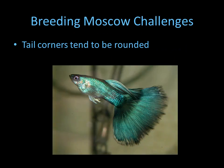Moscows in general tend to have very rounded corners on the tail — this is an extreme example, but watch out for it when choosing your males. Try to pick some that have the best corners possible. After many years of breeding, it always still has a slight roundedness and it's very tough to get it sharp in green Moscows. Other lines like metal heads it's a little bit easier.